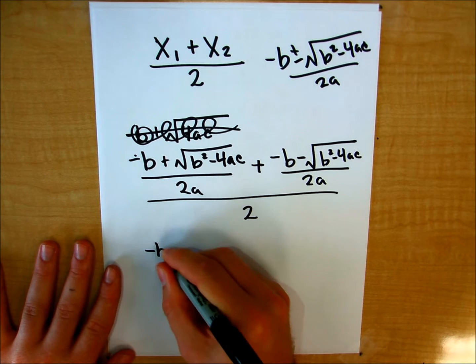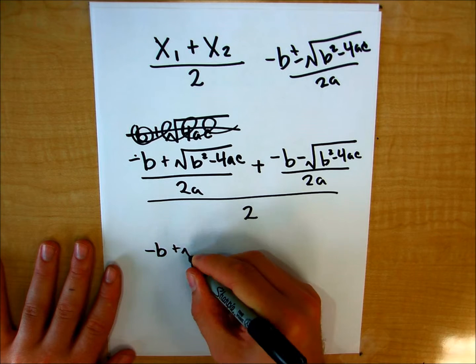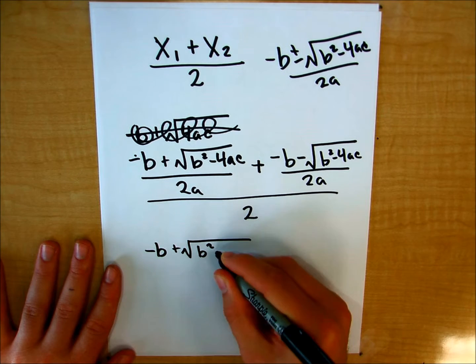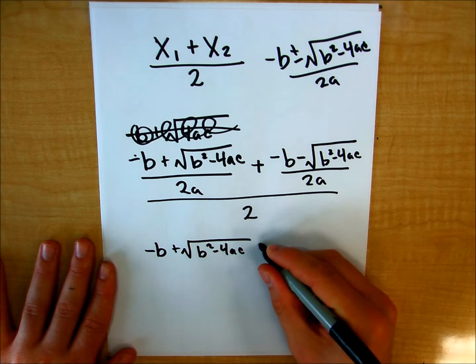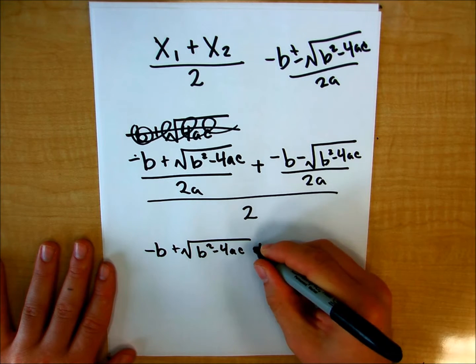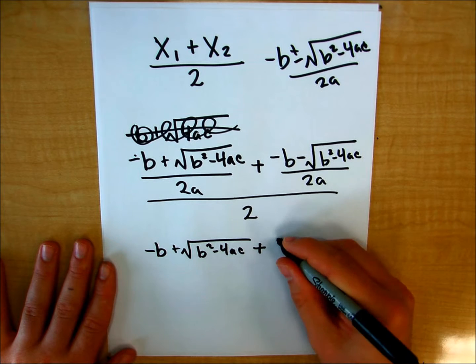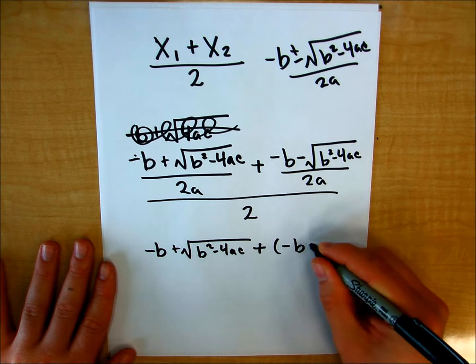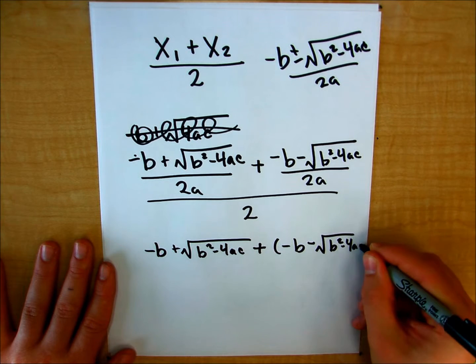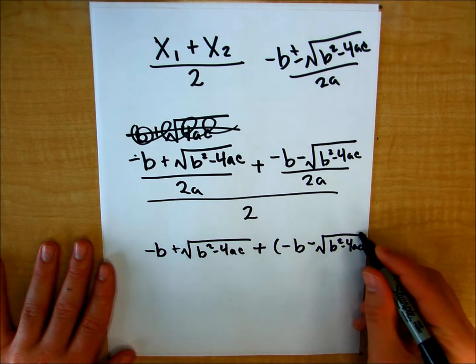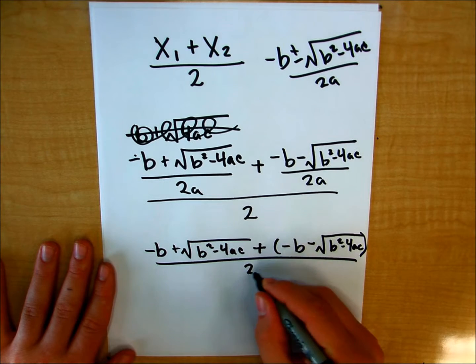So I can just say negative b plus the square root of b squared minus 4ac plus negative b minus the square root of b squared minus 4ac all over 2a.